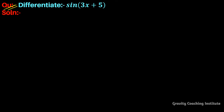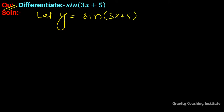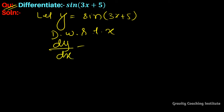Question: differentiate sin(3x + 5). First, let y equal to sin(3x + 5). Now differentiate with respect to x, so dy/dx equal to d/dx of sin(3x + 5).